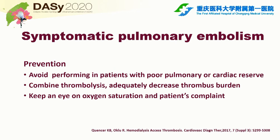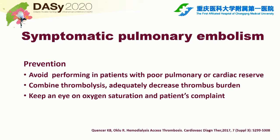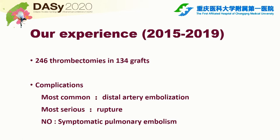To prevent symptomatic pulmonary embolism, we should avoid performing the procedure in patients with poor pulmonary or cardiac function, combine thrombolysis adequately to decrease thrombus burden, and keep an eye on oxygen saturation and patient complaints. In our experience from 2015 to 2019, we performed 246 thrombectomies in 134 grafts. The most common complication was distal arterial embolization; the most serious was rupture; and there was no symptomatic pulmonary embolism.